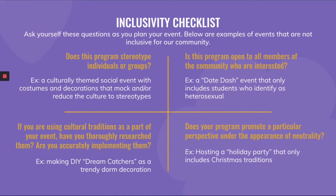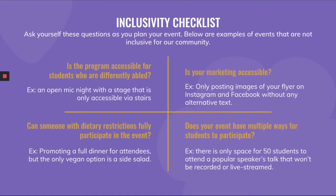We've provided some guiding questions to help you plan your event and spot examples that don't fit USD's inclusivity guidelines. Ask yourself: Does this program stereotype individuals or groups? Is this event open to all members of the community who are interested? If you're using cultural traditions, have you thoroughly researched and accurately implemented them? Does your program promote a particular perspective under the appearance of neutrality? Is the program accessible for students who are differently abled? Is your marketing accessible? Can someone with dietary restrictions fully participate? Does your event have multiple ways for students to participate? Asking these questions will help you create events that are more inclusive for the entire USD community.